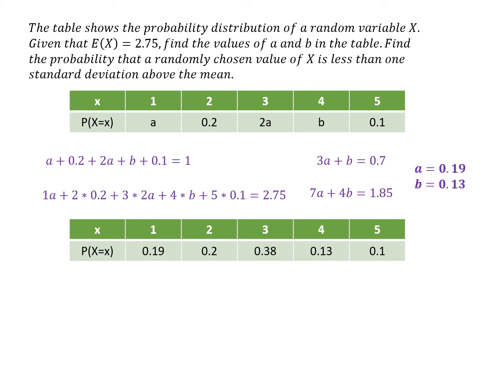The last part of the question asks to find the probability of a randomly chosen value of X being less than one standard deviation above the mean. So I need to know what the standard deviation is first.